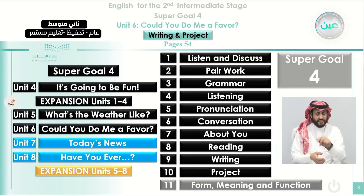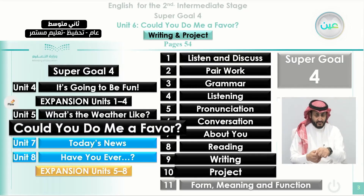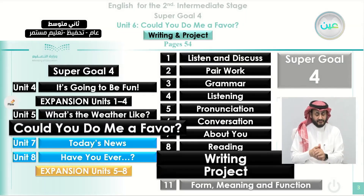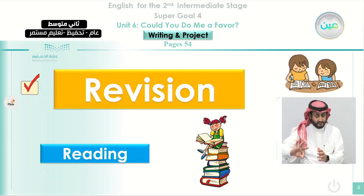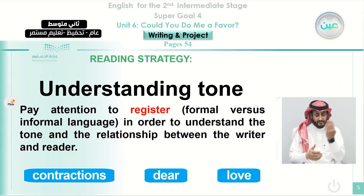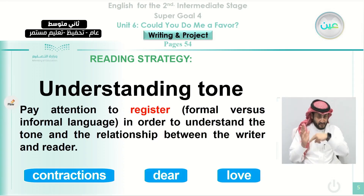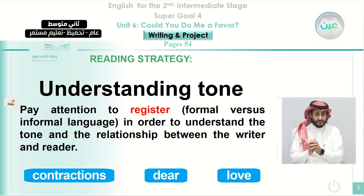We are still at Unit 6, 'Could you do me a favor?' Our class today will be mainly on the 9th and 10th sections: writing and project. Before we start our main class, let's make a quick revision on the previous lesson when we studied reading. We concentrated on the reading strategy, which is understanding the tone. When you read a text, you can identify whether the reading is formal or informal.